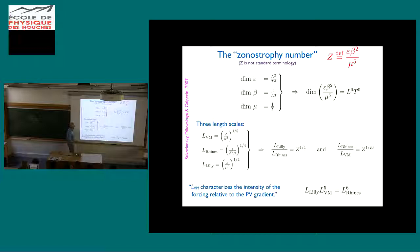And then I mentioned there's three length scales, and the ratios of those length scales can be related to funny fractional powers of the zonostrophy number. So these are not independent length scales. They're related, in fact, by this formula, which is equivalent to that expression for the zonostrophy number.